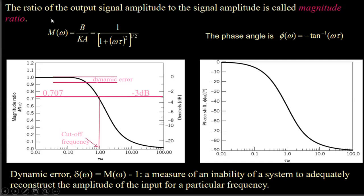The ratio of output signal amplitude to input signal amplitude is called the magnitude ratio M(ω) = 1/√(1 + (ωτ)²), and the phase angle is φ(ω) = −tan⁻¹(ωτ). The dynamic error equals M(ω) − 1, which is a measure of the system's ability to adequately reconstruct the amplitude of the input for a particular frequency.